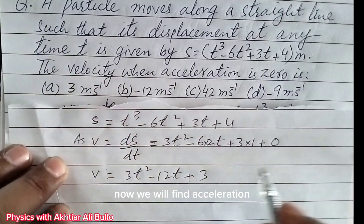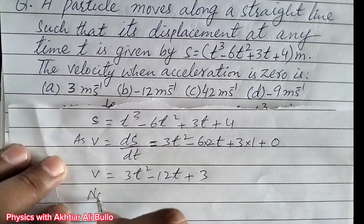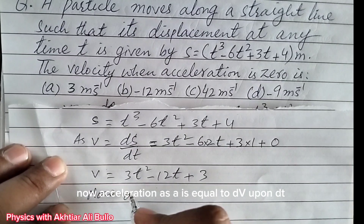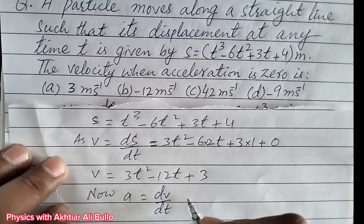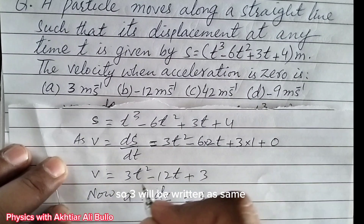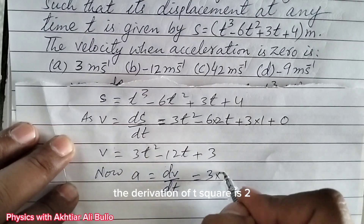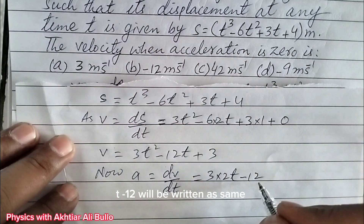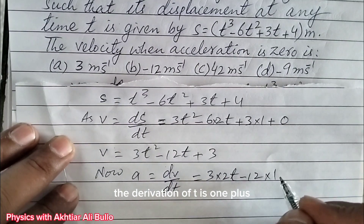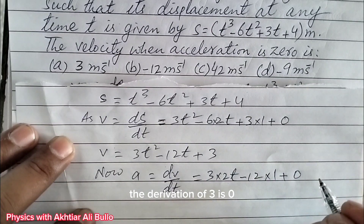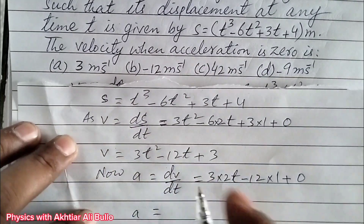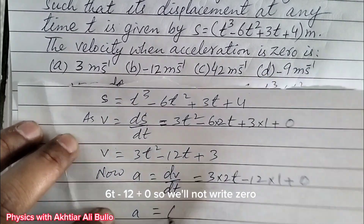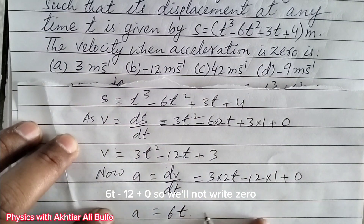Now we will find acceleration. Acceleration a is equal to dv/dt. The derivative of 3t² is 6t, minus the derivative of 12t which is 12, plus the derivative of 3 which is 0. So a will be equal to 6t - 12.